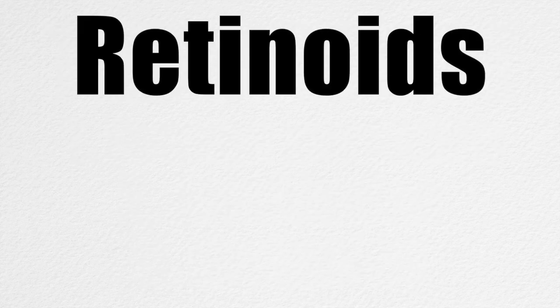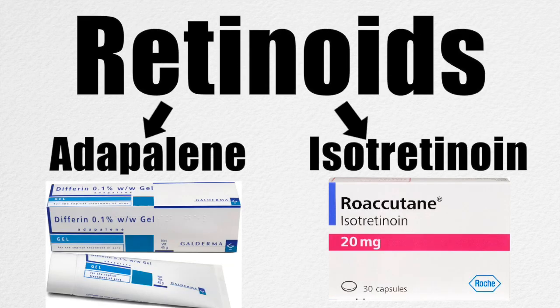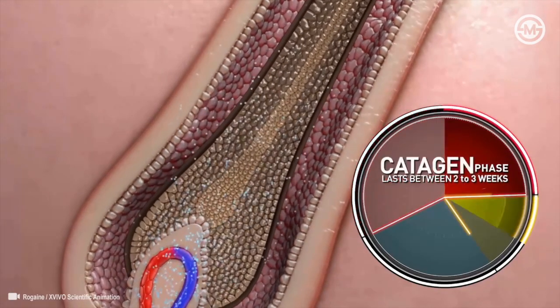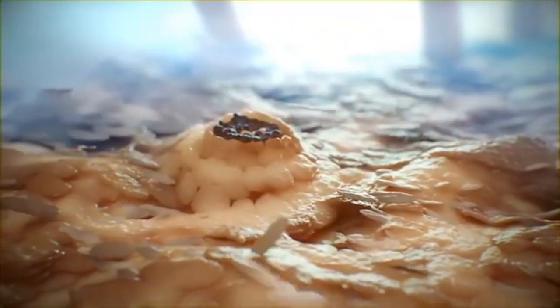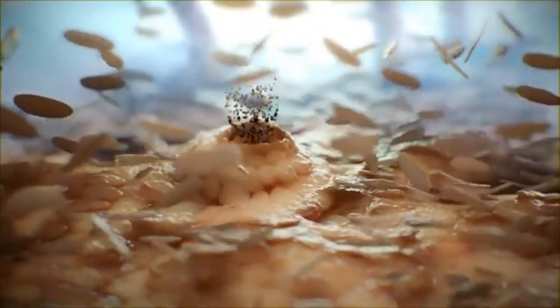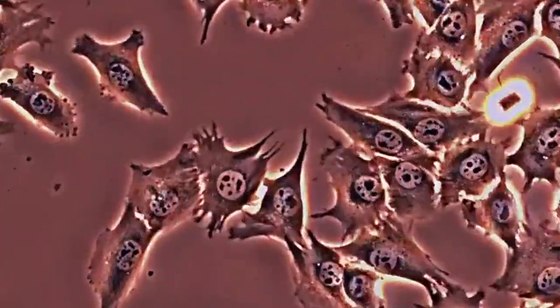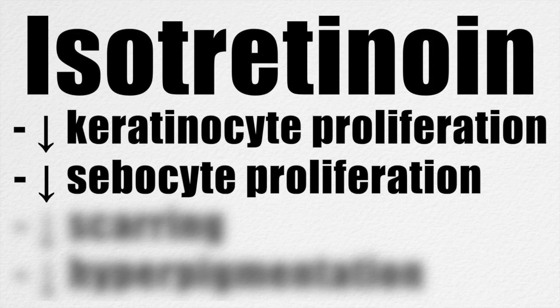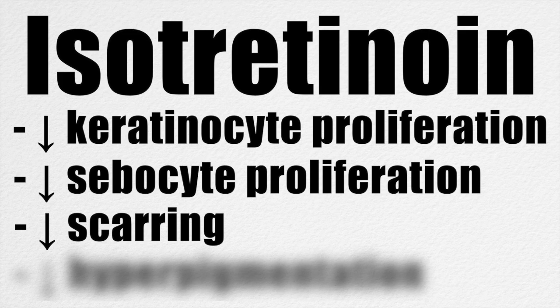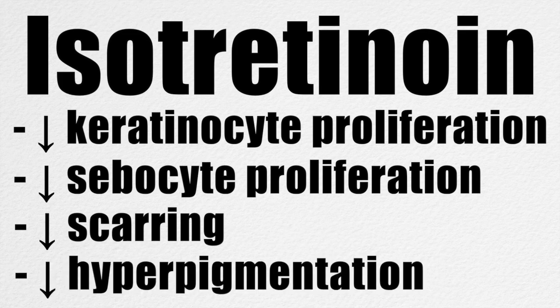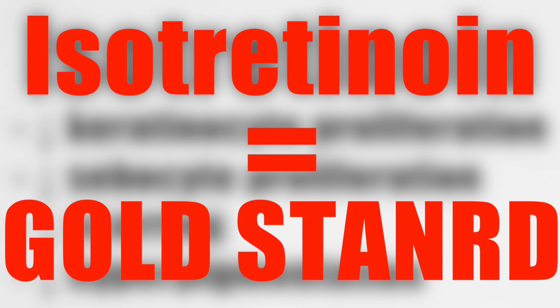3. Retinoids — options include topical adapalene or oral isotretinoin, otherwise known by the brand name Accutane. Retinoids act by reducing keratinocyte proliferation and increasing keratinocyte shedding, overall preventing dead skin cells from blocking the hair follicles. Oral isotretinoin also inhibits the proliferation of sebocytes, resulting in decreased sebum production. This explains why a major side effect of isotretinoin is dry, flaky skin. In addition, retinoids have been shown to decrease secondary scarring and hyperpigmentation. All of these reasons combined make isotretinoin the gold standard in acne treatment.